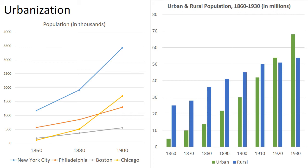As you can see from the graph on the left, the populations of four major cities rose between 1860 and 1900, especially New York City, whose population rose to almost 3.5 million by the turn of the century. On the right, you can see the U.S. was primarily a rural nation until 1920, when the urban population outnumbered Americans living on farms and in rural areas.